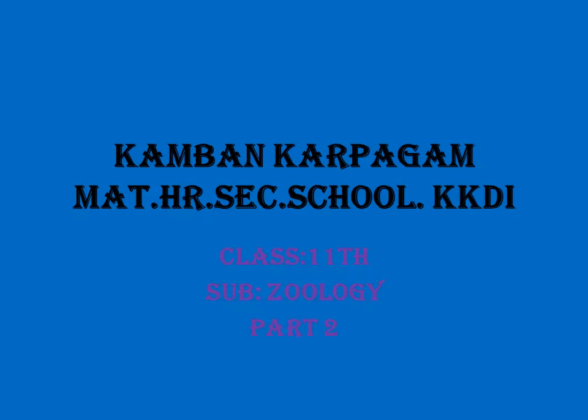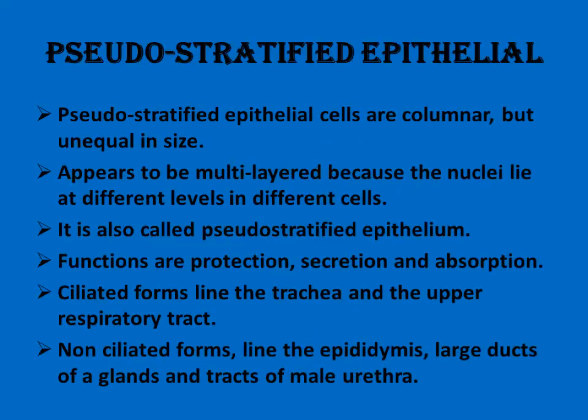Good morning children. This is the second part of Chapter Three: Tissue Level of Organization. The first topic is pseudo-stratified epithelium. These are generally columnar but unequal in size, multi-layered, with nuclei present at different levels in different cells. The general functions are protection, secretion, and absorption. Ciliated forms line the trachea and upper respiratory tract; non-ciliated forms line the epididymis and larger ducts of glands.